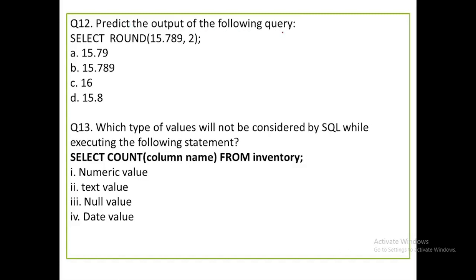Next: predict the output of the following query — SELECT ROUND(15.789, 2). You need to round 15.789 to two decimal places. There are three decimal places: 7, 8, 9. The third decimal digit is 9, which is greater than or equal to 5, so you add 1 to the second decimal place: 8 + 1 = 9. The result is 15.79. The first option, 15.79, is correct.